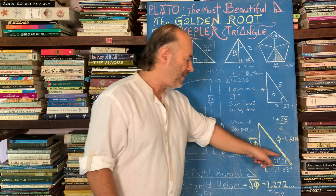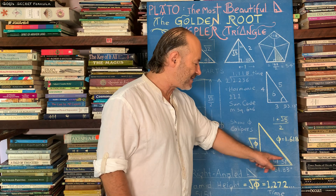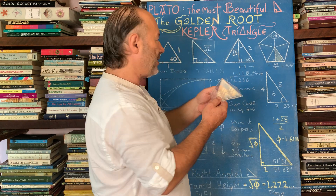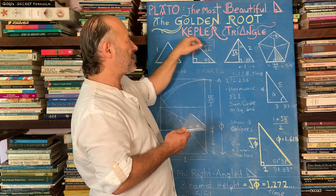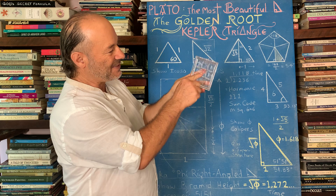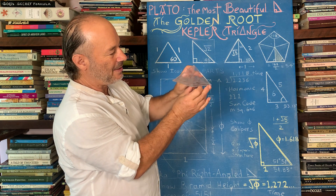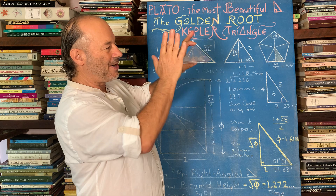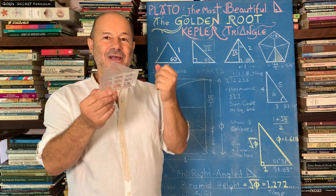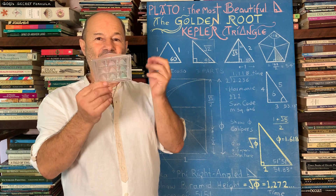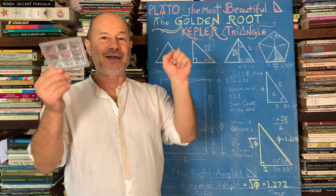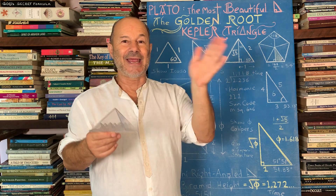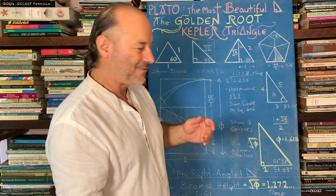The angle of this triangle happens to be 51 degrees and 51 minutes, or 51.83 as a decimal. This right-angled golden root triangle — also known as the Kepler triangle — maps directly onto the Great Pyramid: from the centre of the base to the edge is 1, the slope height to the midpoint is 1.618, and the vertical height is 1.272. This is a superstructure — highly sophisticated coding hidden in stone. When they built the Great Pyramid of Cheops, this was done about 12,000 years ago. This is Atlantean knowledge, recorded in stone for future generations.